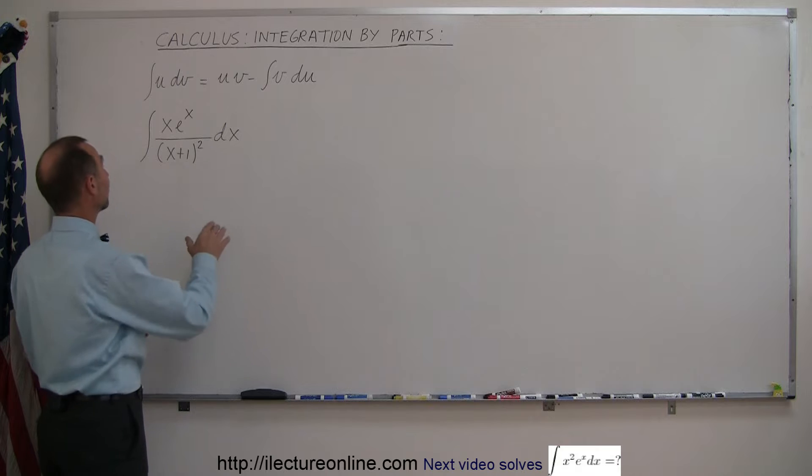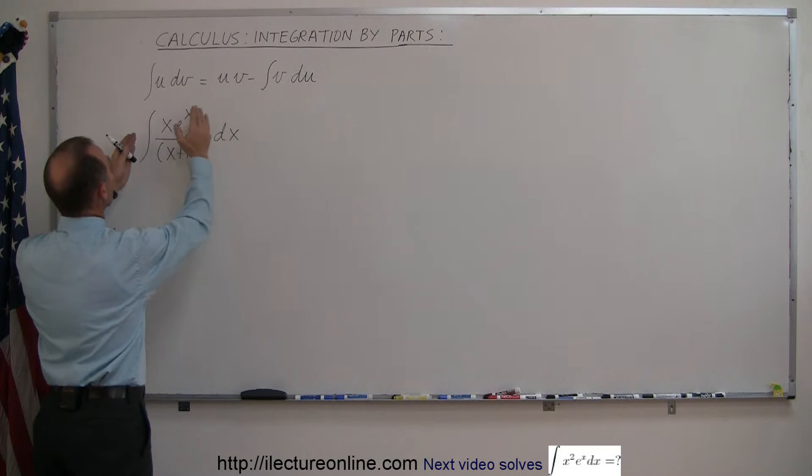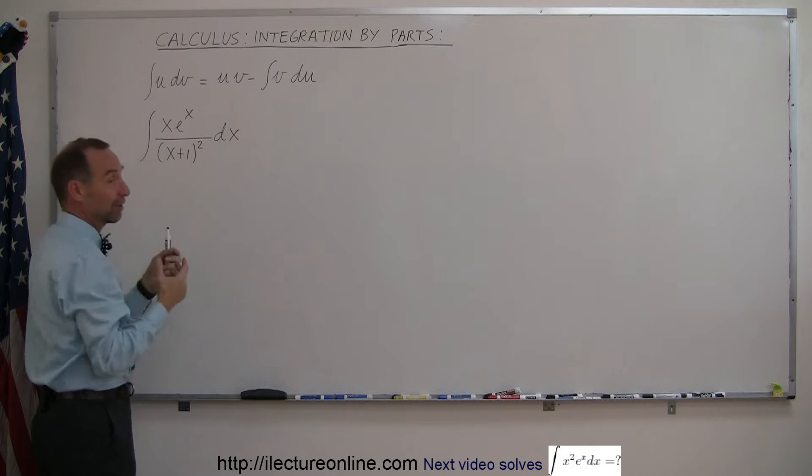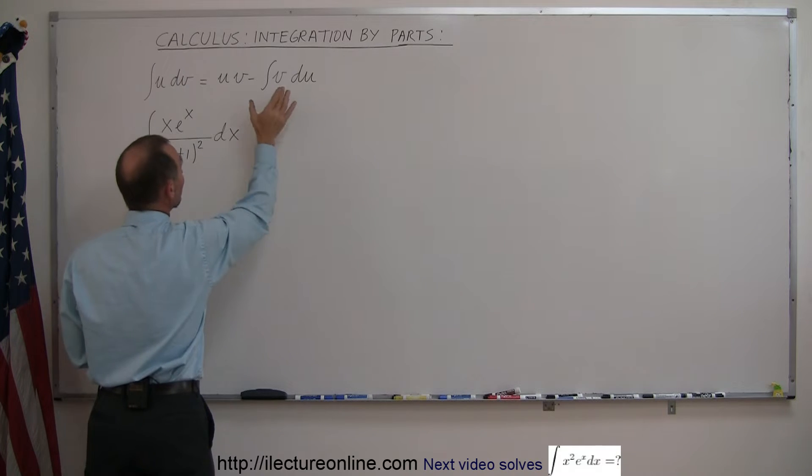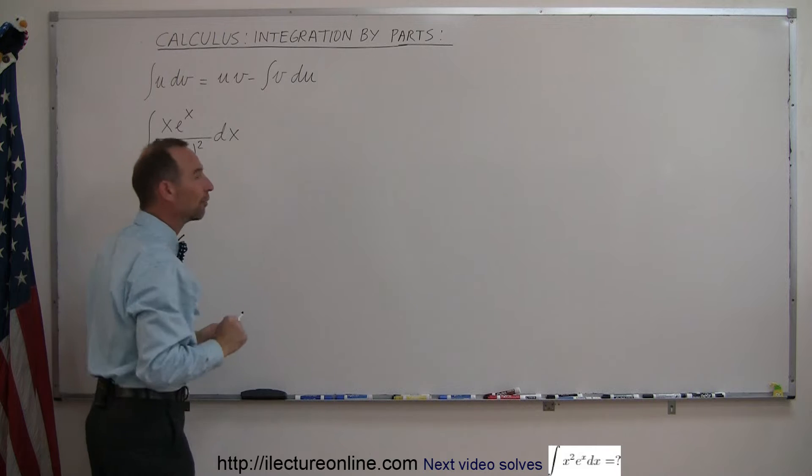Alright, again the rule is that if you could somehow visualize this to be u times dv, you have to figure out what the u is and what the dv is, then you can simply integrate it like that and hopefully your v du will be much easier to integrate than what you have over here.